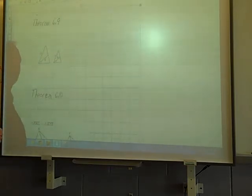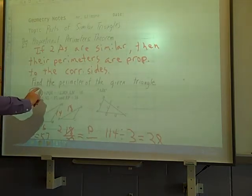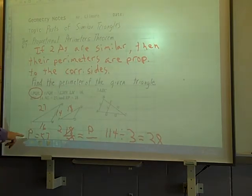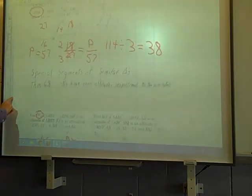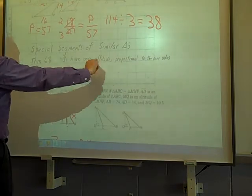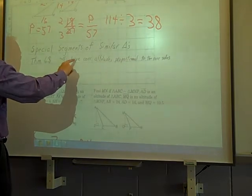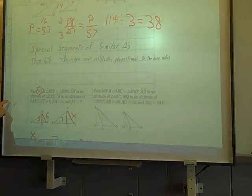Now theorem 6.9 is very similar to 6.8. Similar triangles have corresponding not altitudes this time, let's use medians.